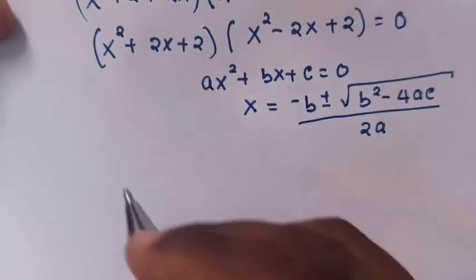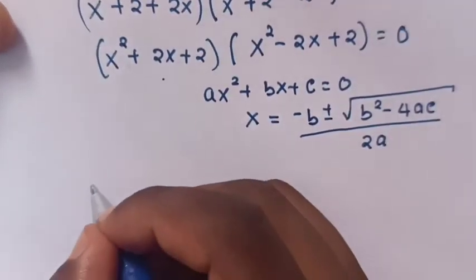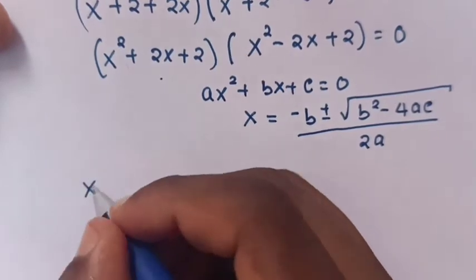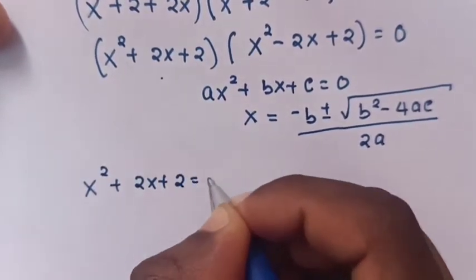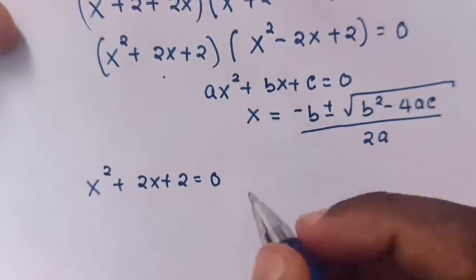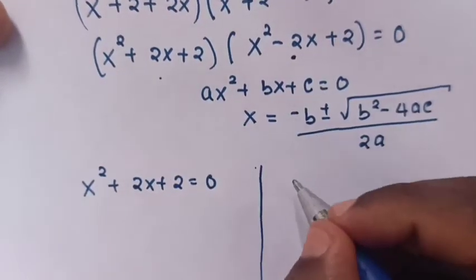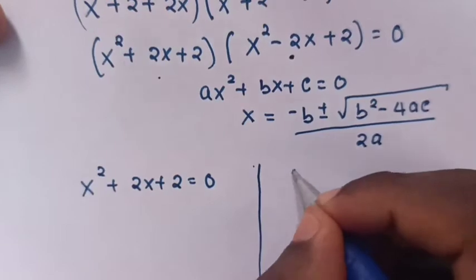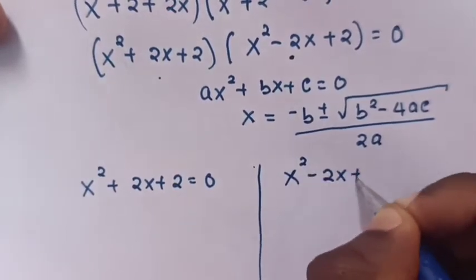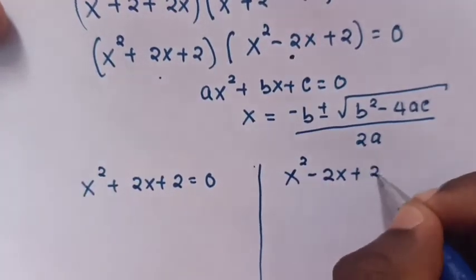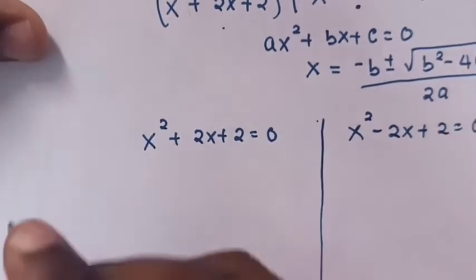From this part, x² + 2x + 2 = 0. Here we'll find the value of x. And again, from this part, x² − 2x + 2 = 0, so in this part we'll find the value of x.